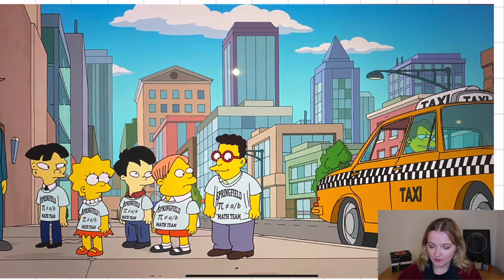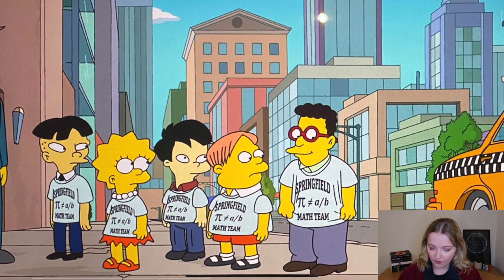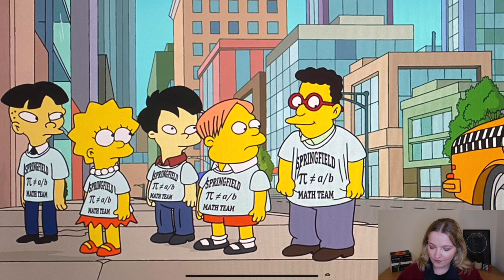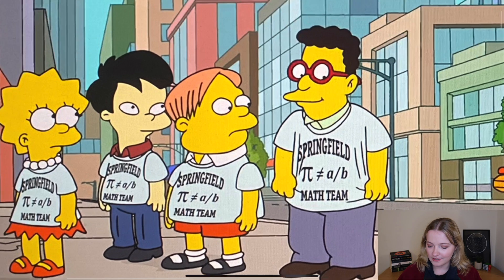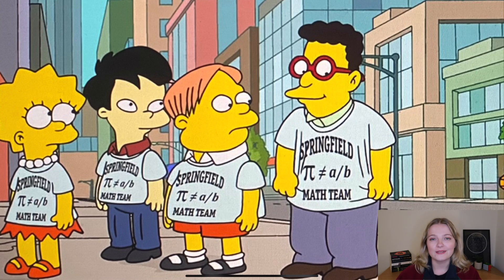The first maths that we see is when the Mathletes put on their uniform and if you can see there is on their t-shirts it says Springfield and then it says Pi does not equal A over B. So the first maths that we see in this is this Pi does not equal A over B and that is alluding to the fact that Pi is a transcendental number and therefore it cannot be written as a ratio. So you cannot write Pi as A over B.